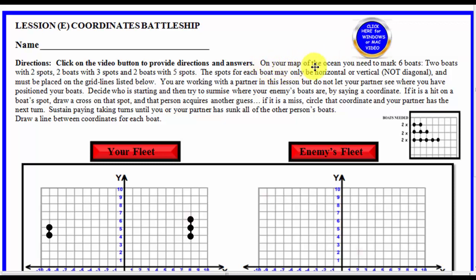On your map of the ocean, you need to mark six boats. Two boats with two spots, two boats with three spots, and two boats with five spots. The spots for each boat may be horizontal or vertical, not diagonal, and they all must be placed on the grid lines listed below.